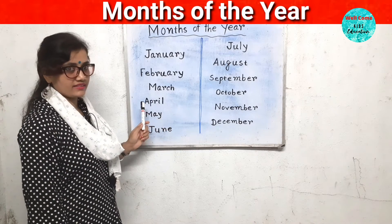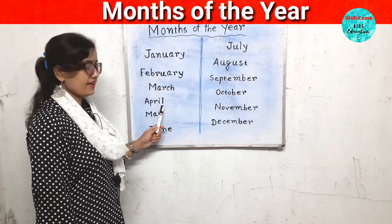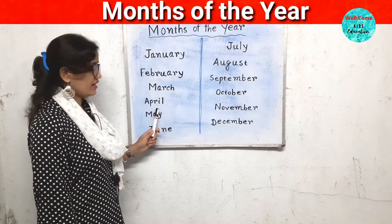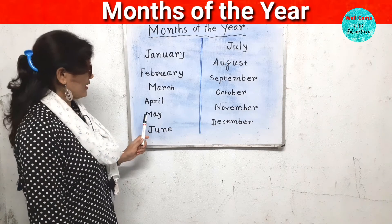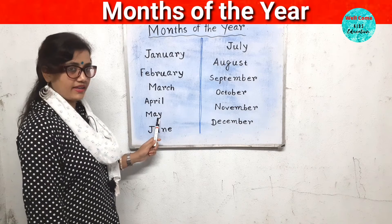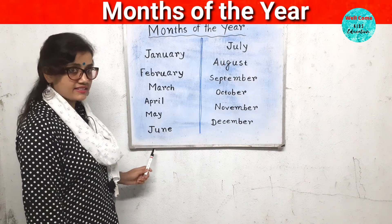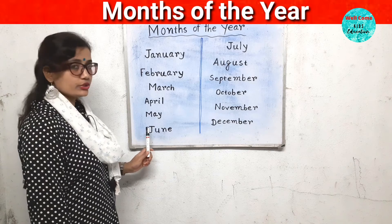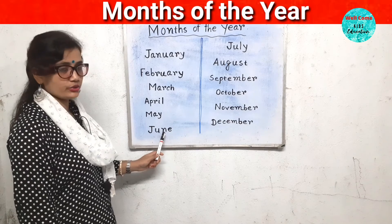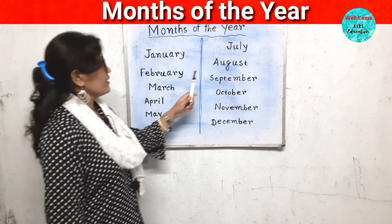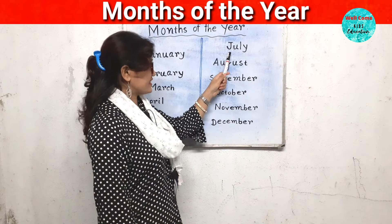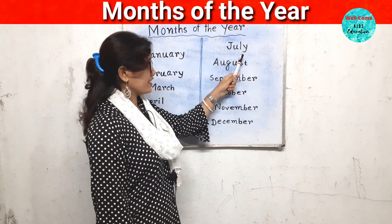The fourth month is April. A-P-R-I-L. April. The fifth month is May. May. The sixth month is June. J-U-N-E. June. The seventh month is July. J-U-L-Y. July.